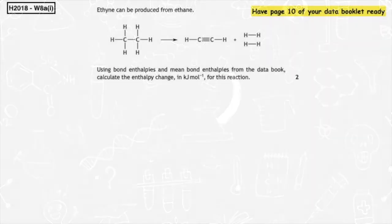This past paper question is from the Higher 2018 written A part 1: ethine can be produced from ethane. Using bond enthalpies and mean bond enthalpies from the data booklet, calculate the enthalpy change in kilojoules per mole for this reaction. You can pause the video to have a go, and when you're ready press resume and I'll go through the worked answer with you.